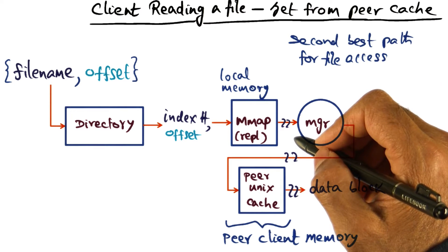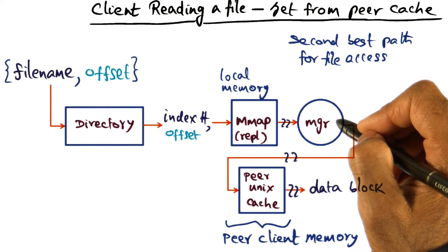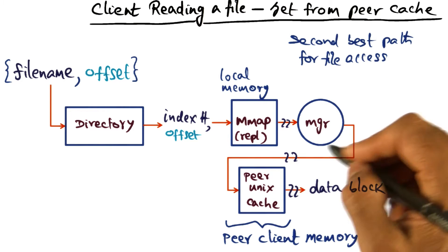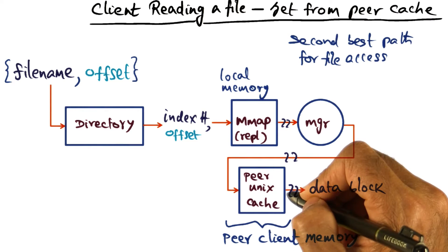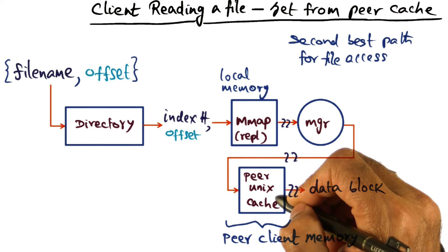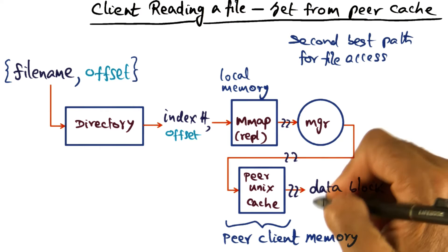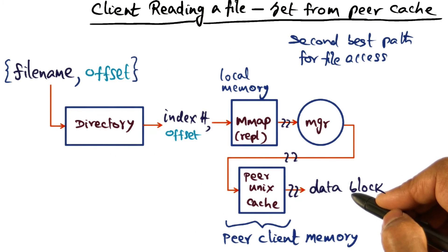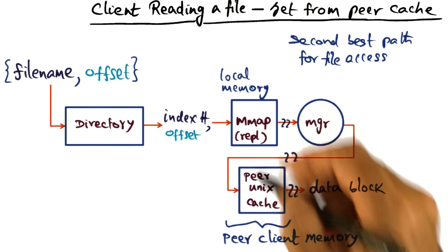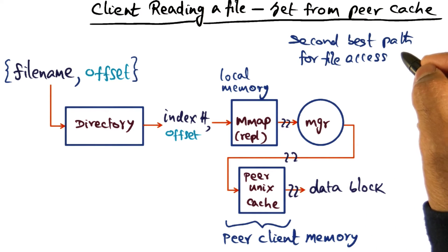There is network communication involved here because first I have to hop over the network to get to the manager node, if I'm not the manager node myself for this particular file. There could be another network hop if the manager says this file is cached in a different node. In that case, there is another network hop to go to the client currently containing that file, and yet another hop to send the data back to the first requester. So potentially there could be three network hops, but it could be less depending on the co-location of the manager, the requesting node, or the node containing the cached file. This is the second best path for file access.